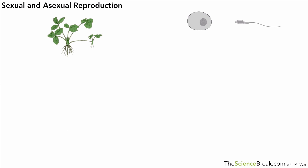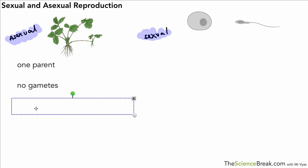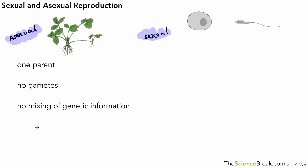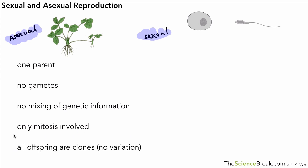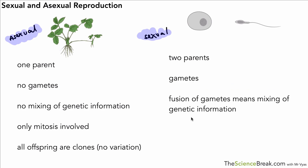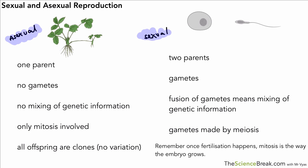We can now compare the two types. For asexual reproduction: only one parent, no gametes formed, no mixing of genetic information, only mitosis is involved, and all offspring are clones with no variation unless due to the environment. For sexual reproduction: two parents, gametes are formed — sperm cells, egg cells, or pollen grains — and there is fusion of gametes.